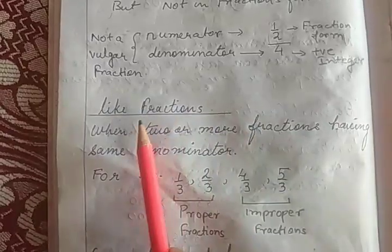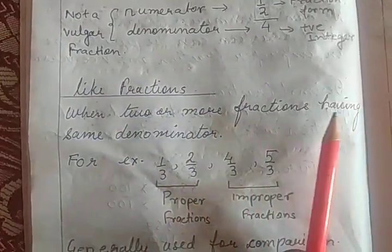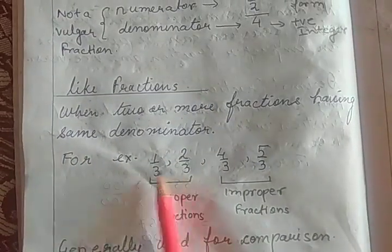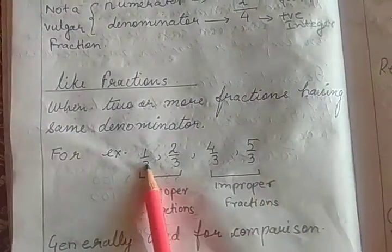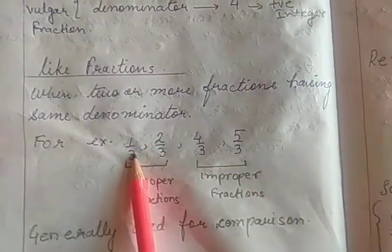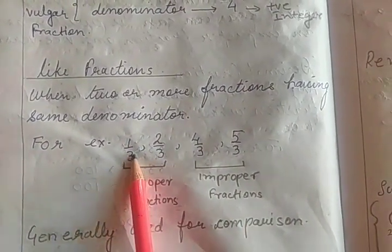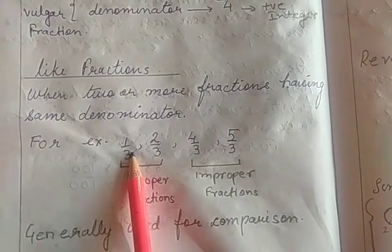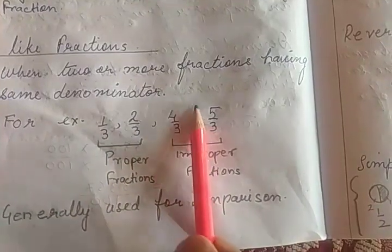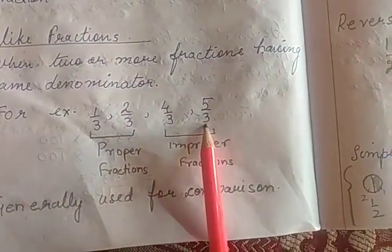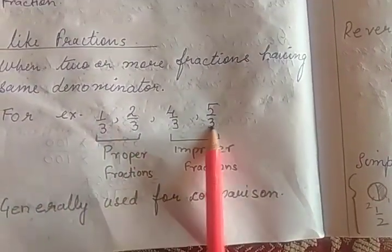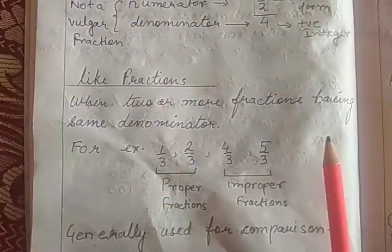Like fractions: when 2 or more fractions have the same denominator, they are called like fractions. For example, proper fractions where denominator is bigger than numerator, and improper fractions where numerator is bigger than denominator — if the denominators are same, we say it as like fractions. It is generally used for comparison.